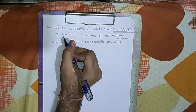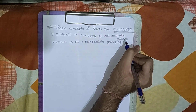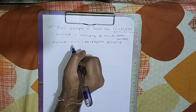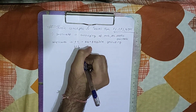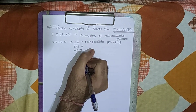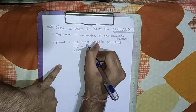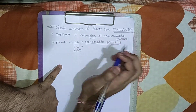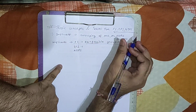First, what is an implicant? An implicant is basically a grouping of one or more min terms. These implicants can be prime implicants, EPI (essential prime implicants), and NEPI. So first, what is a prime implicant? A prime implicant is basically the best possible grouping, whereas an implicant is just a grouping of one or more min terms.